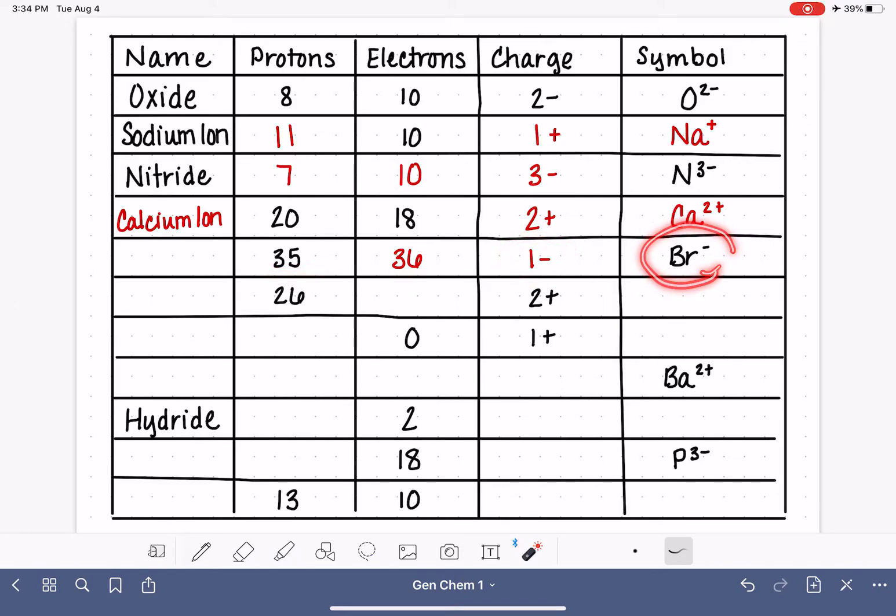Br atom is bromine. So as an ion, we would call this bromide. Again, we're changing that ending to ide because it's a negatively charged ion, an anion.